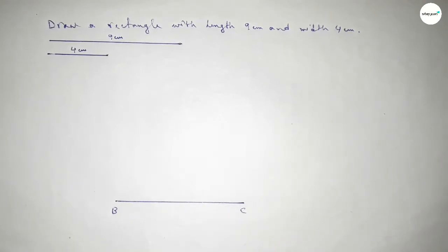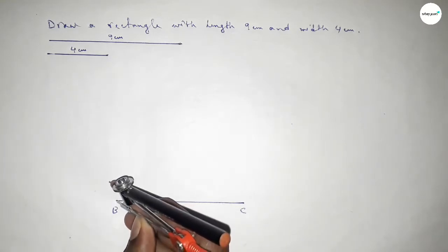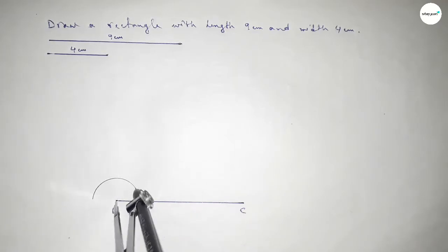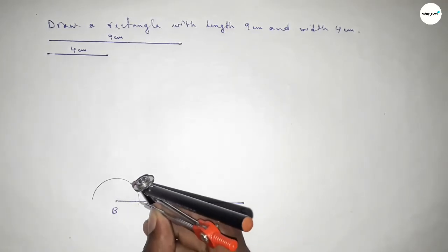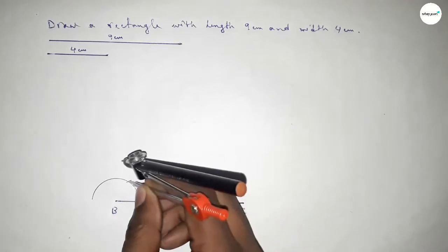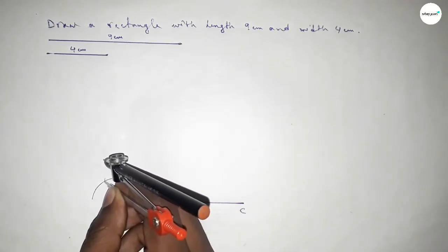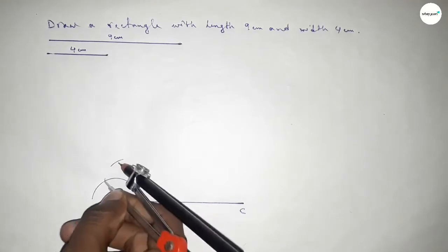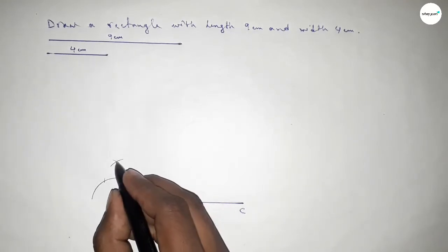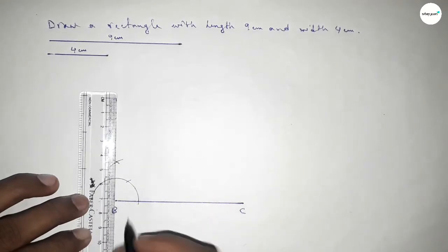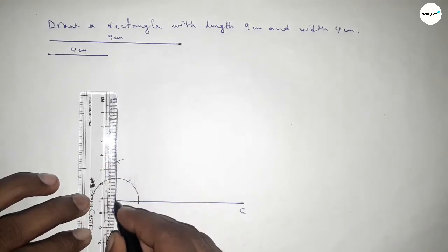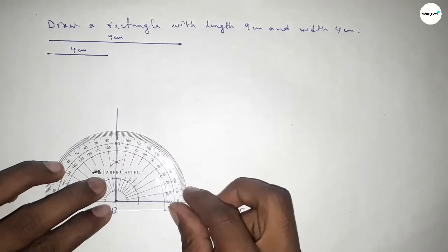Now we have to draw a 90 degree angle at point B. So putting the compass on point B and taking any length, drawing an arc. Then putting the compass at different positions with the same length, cutting arcs until both curves intersect at a point. Now joining this to get a 90 degree angle.